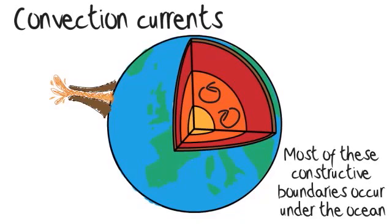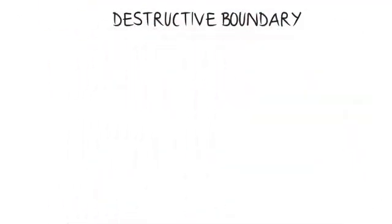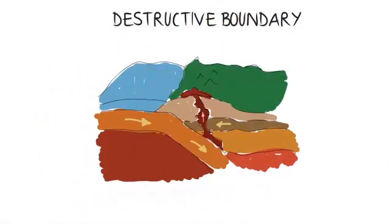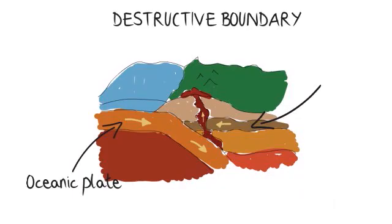When two plates move together in a destructive boundary, it's usually an oceanic plate and a continental plate. As the oceanic plate is denser, when the two collide, it's forced underneath the continental plate, melting as it goes.